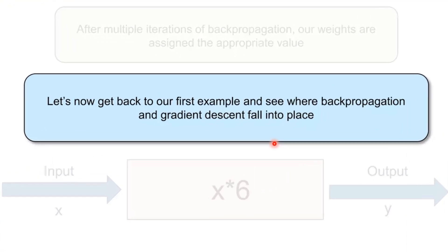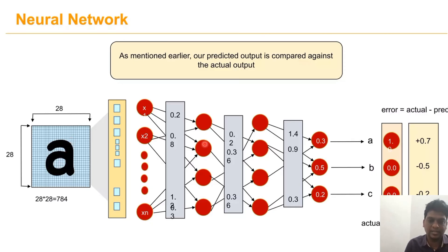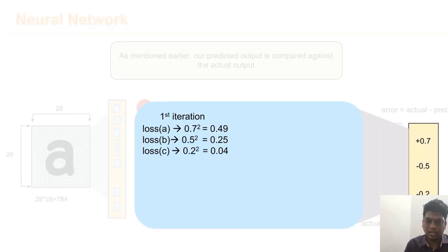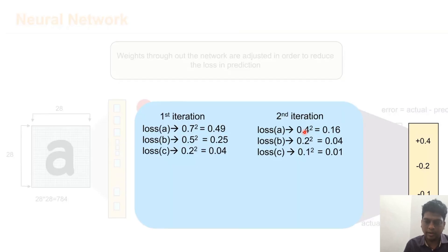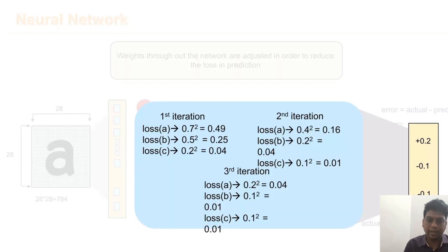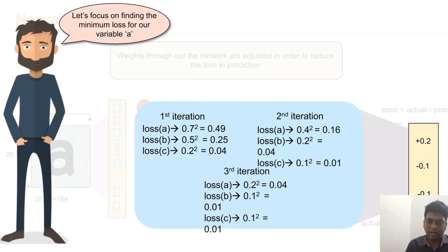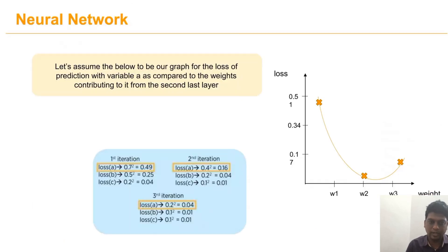Our network is trained and can now be used to make predictions. Going back to the A, B, C example, we can see how backpropagation and gradient descent work together. For the first iteration we compute the squared loss values and adjust the weights to reduce the loss. In the second iteration we get an improved loss value. By the third iteration, the loss for A is 0.04, for B it is 0.01, and for C it is 0.0. Focusing on variable A, the minimum loss is 0.04; plotting weight versus loss we find the minimum.